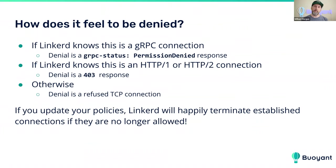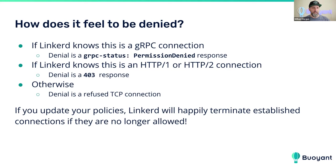How denials work is protocol-specific. If we know it's a gRPC connection, we return a gRPC-specific permission-denied response. If it's non-gRPC H2 or H1, we return a 403. Otherwise, if Linkerd is treating the connection as TCP, we just terminate the connection or refuse to establish it. The CRDs are read dynamically, so if you update policies in the middle of an existing connection, Linkerd will terminate that TCP connection or start responding with 403s for HTTP.